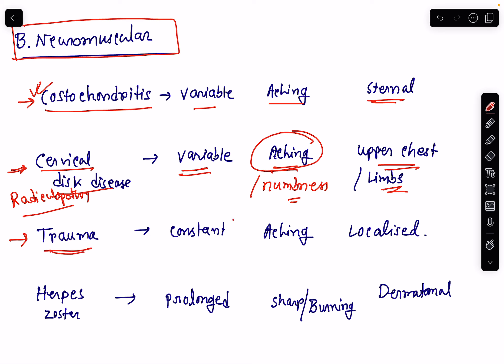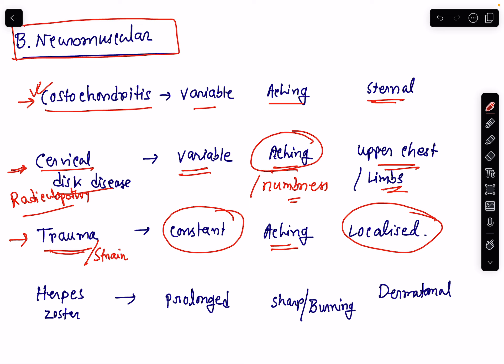Pain from trauma is usually constant — aching type — and localized to the site of trauma. Similarly with strain, the pain will be constant, aching type, and localized. The pain of strain is reproducible — if you press over the area there will be tenderness.